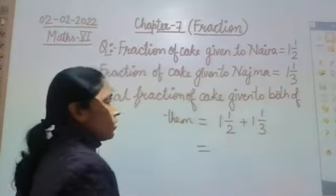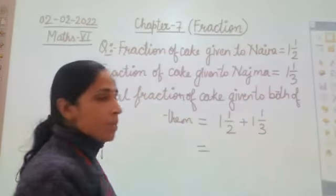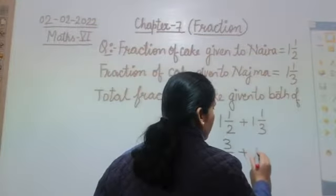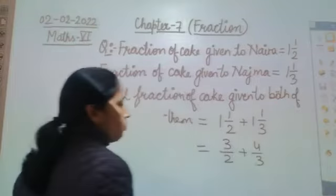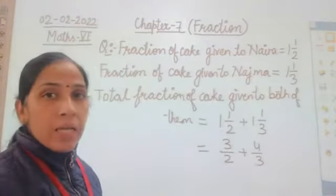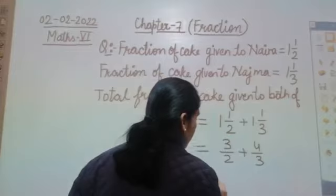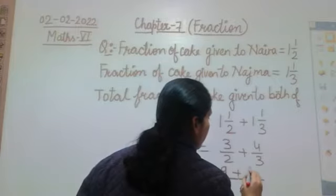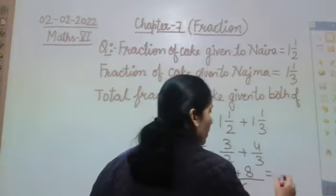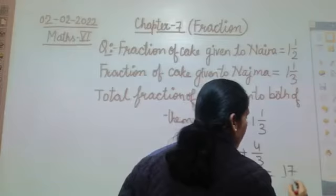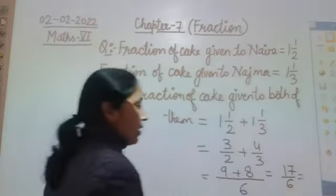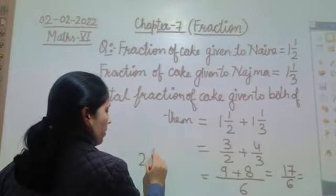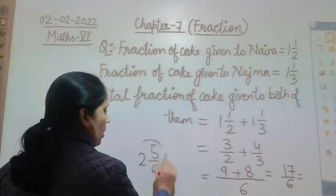First we will change these into improper fractions and then add them. So 1 and 1/2 becomes 3/2 and 1 and 1/3 becomes 4/3. Now find the LCM of 2 and 3, which is 6. Then 3×3 = 9 and 4×2 = 8. The sum is 9 plus 8 = 17/6, which can be written as 2 and 5/6 in mixed fraction.